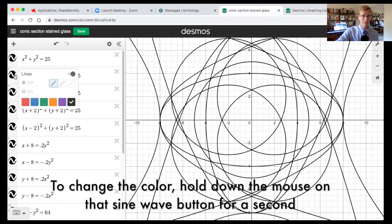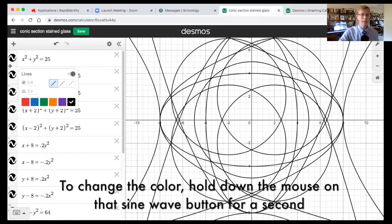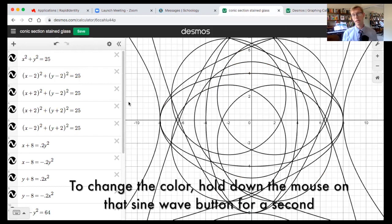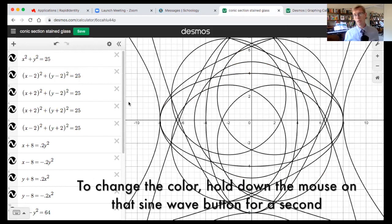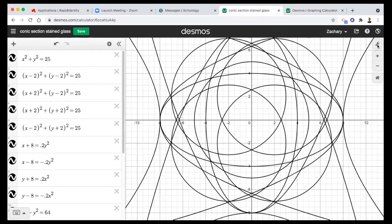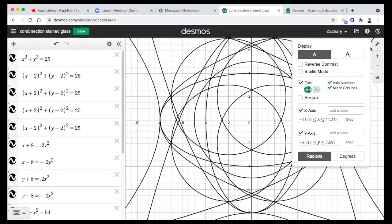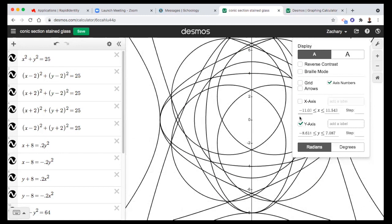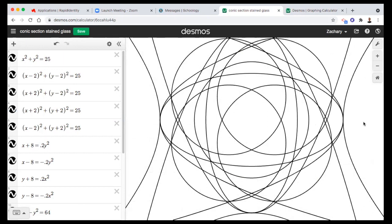You'll notice that I changed the color of these to black because what I'm going to do is take a screenshot of this and put it into Photoshop and then use the paint bucket tool to change the colors of each of these. So just a couple tips. You can go over here to the wrench button, and we can hide the grid, we can hide the axes, and then we get just a nice looking drawing.